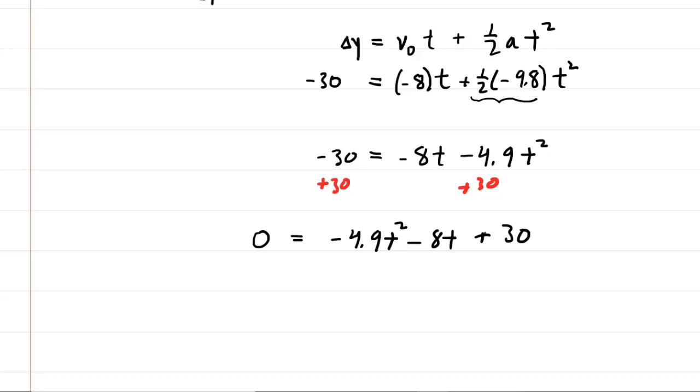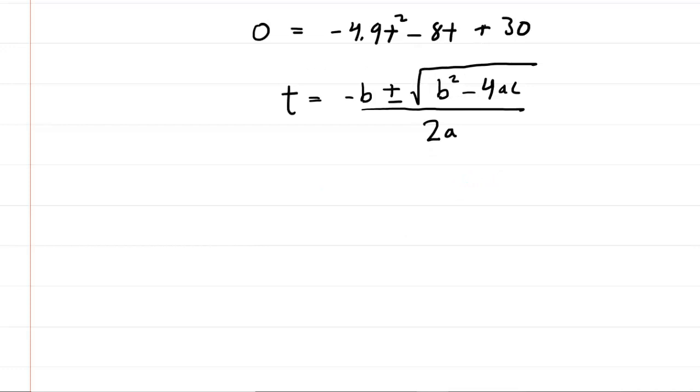Of course, we all recall the quadratic formula. Let's write that down. There we have it. And usually it's a good idea to write down the values of a, b, and c before you begin to plug in. So this number right here in front of the t squared, that's our a. This negative 8, which is in front of the t, is our b. And then the positive 30 is our c.